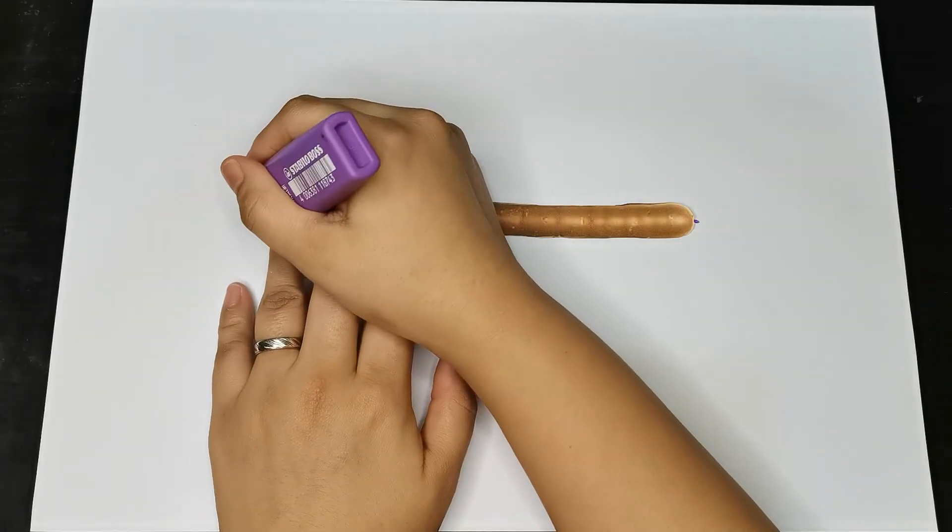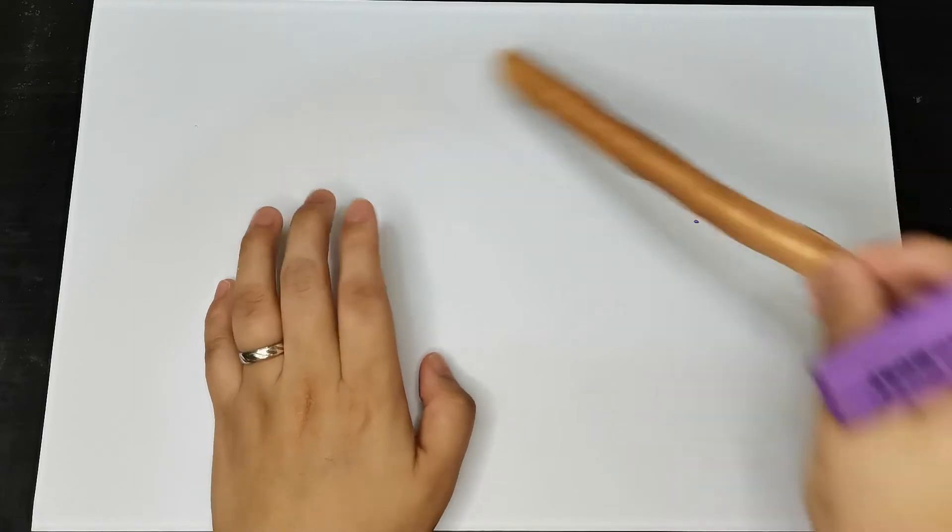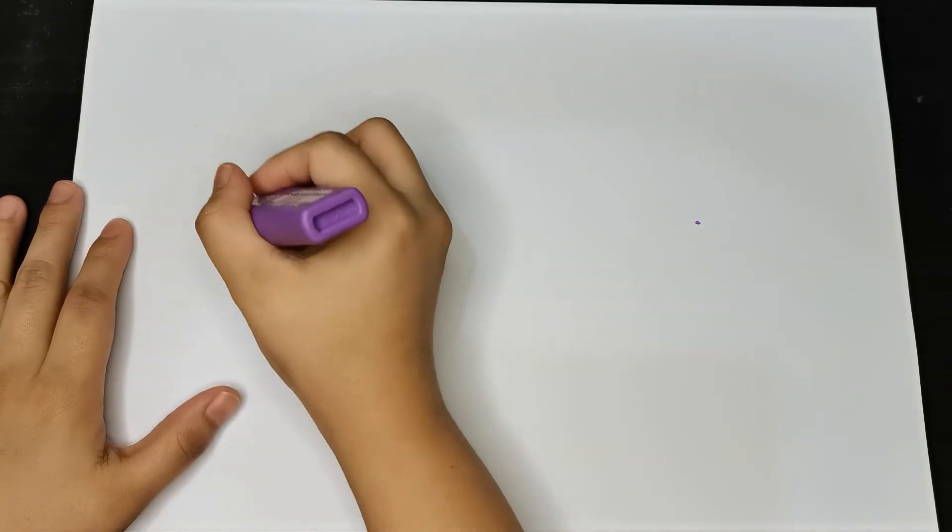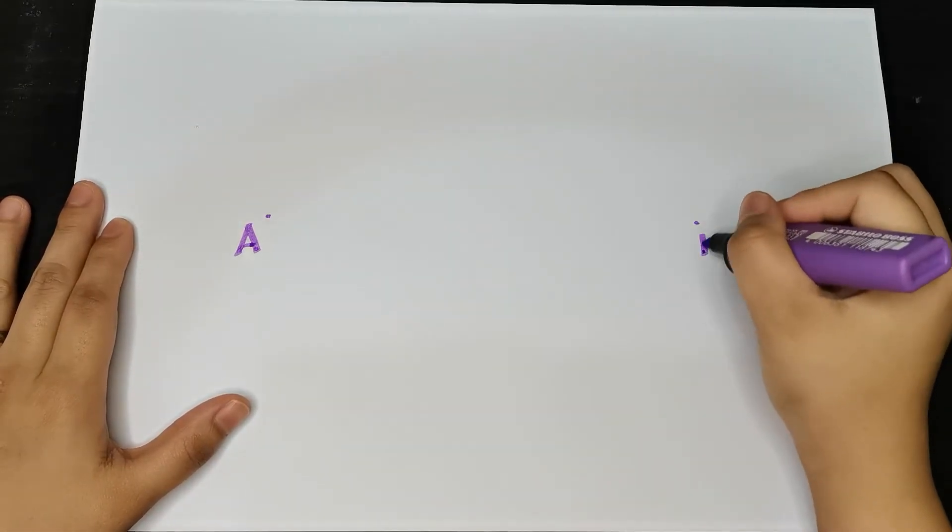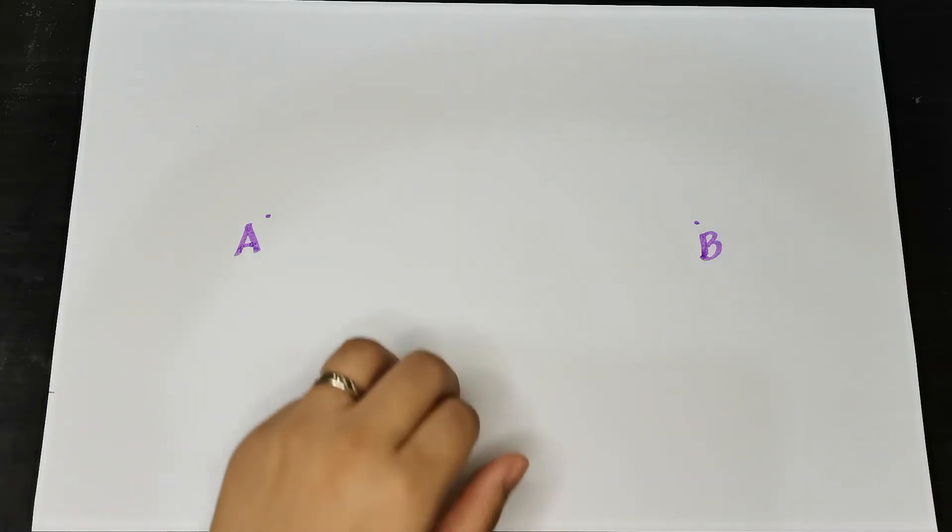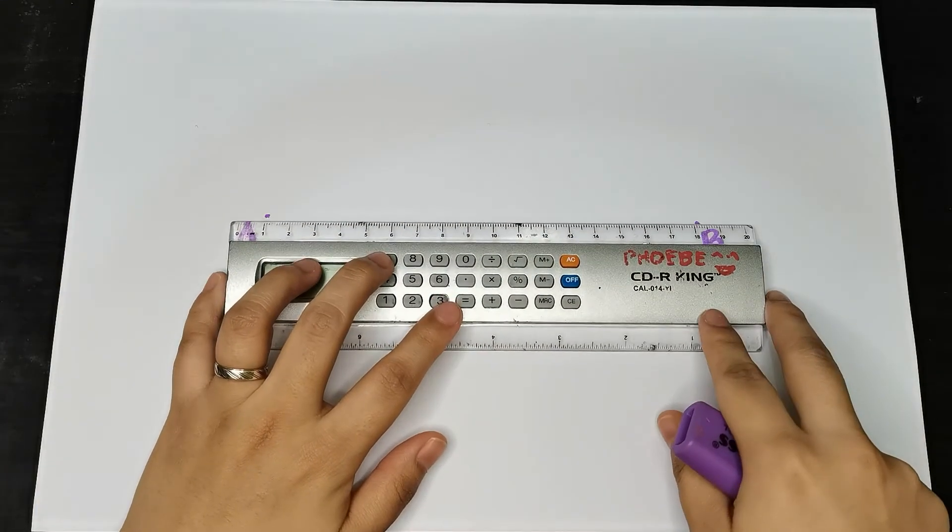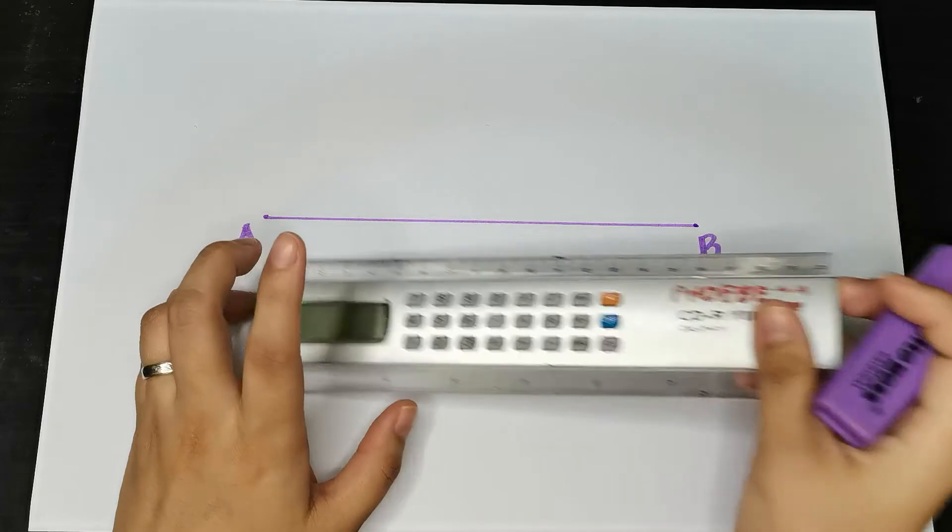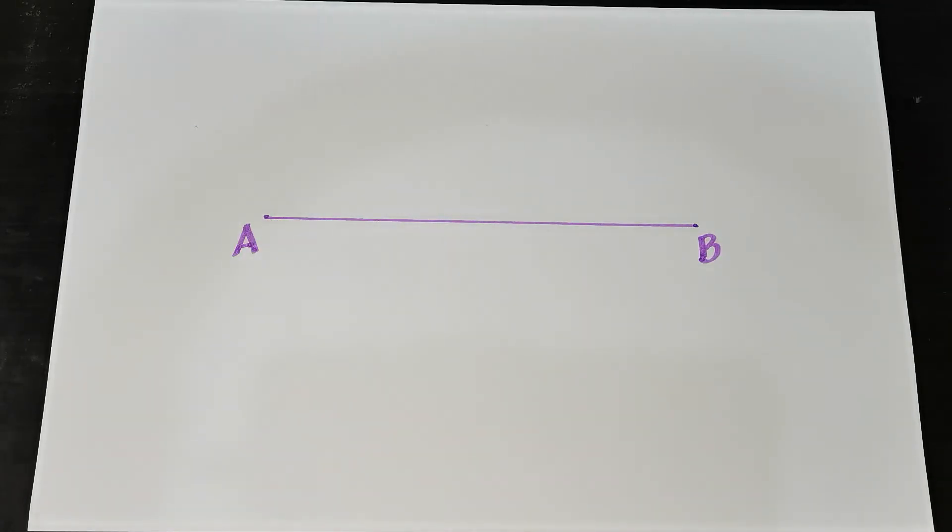To start, I will draw two points that will serve as the endpoints of my line segment. Let me name this as point A and this one is point B. Then connect the two points using a straight edge, and voila, you already have line segment AB.